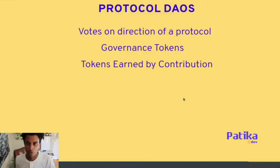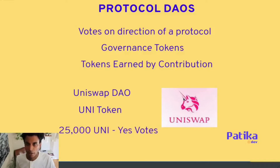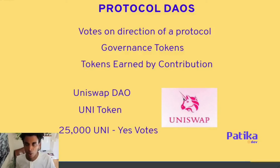Whether you're contributing through code, through funds, or maybe through liquidity in a DeFi protocol, you will receive tokens that will be tied to your voting influence. An example of this is the Uniswap DAO. They have a UNI token assigned as a governance token. The total amount of holders who vote yes must equal 25,000 UNI tokens before a yes vote can pass. So if I've put together a proposal and released it to the DAO, I need holders of at least 25,000 UNI for a change to the protocol to be passed.